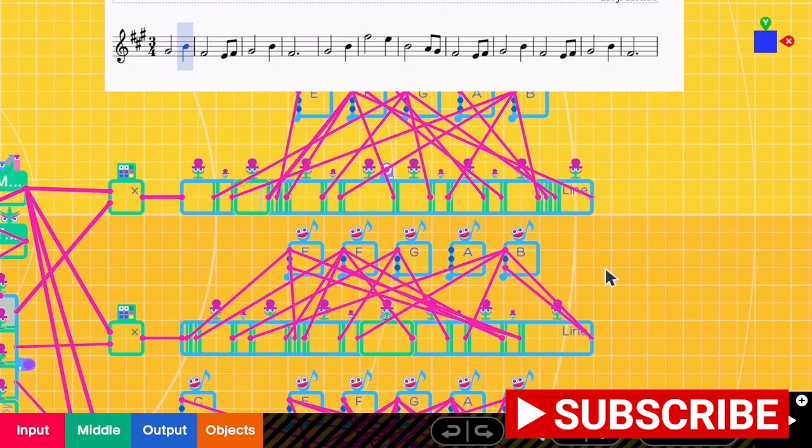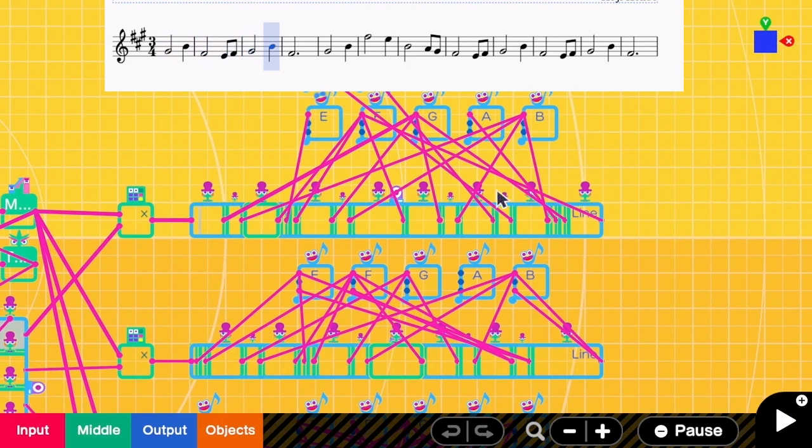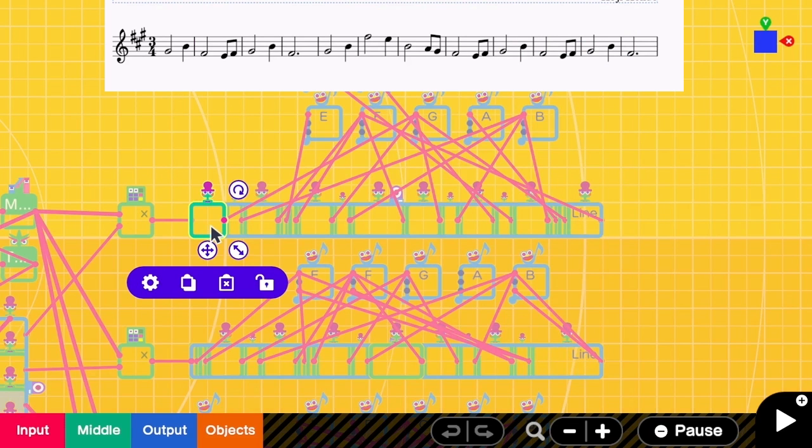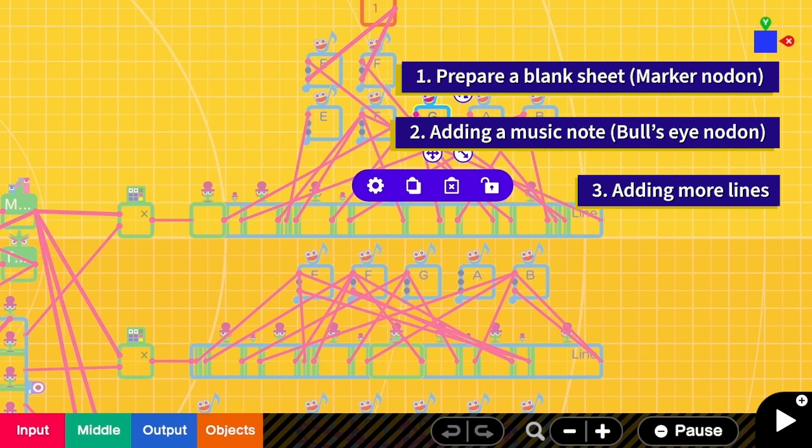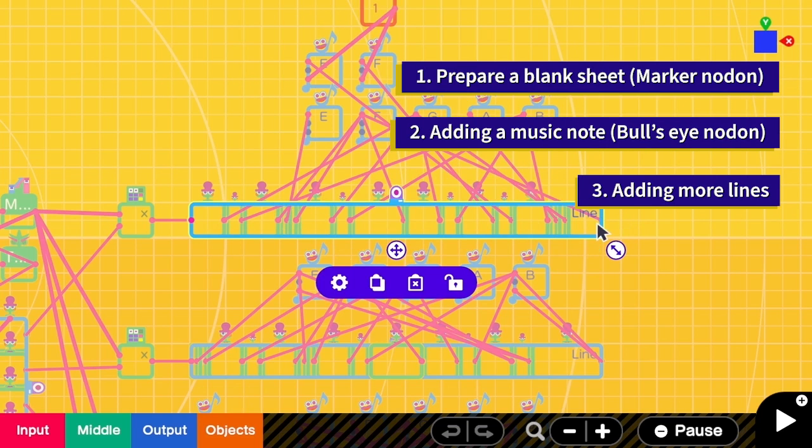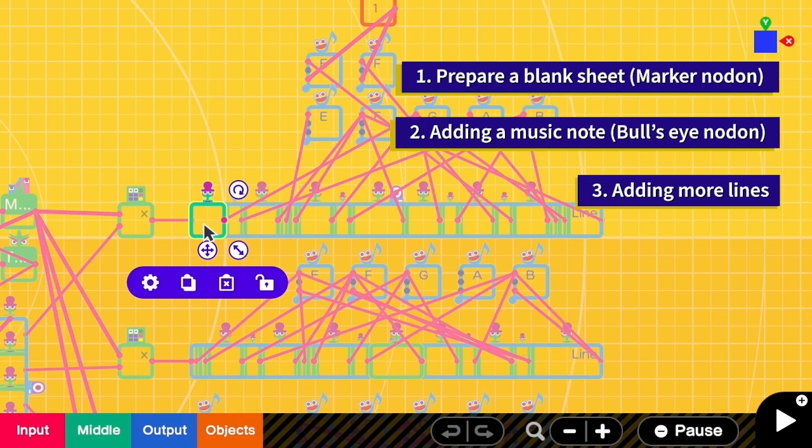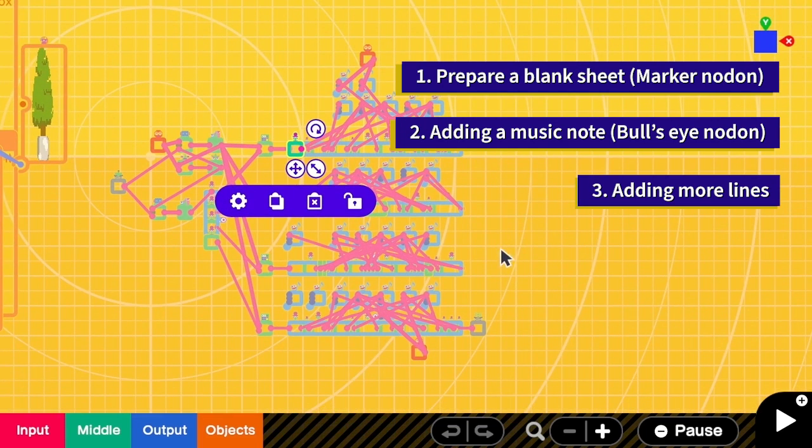Before we start, let me give a basic idea. You can see the music score at the top, and basically this marker nodon will act as a line in the music score. Then this moving line will act as the reader that keeps moving from left to right, and each bull's eye nodon will be the music note. For example, this one represents G. To summarize, there are three steps: the first step is to create this marker nodon, the second step is to create these single notes, and the third one is to link multiple lines together.